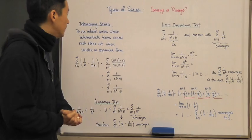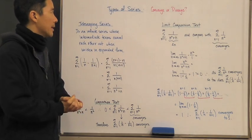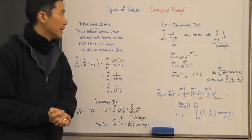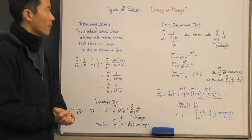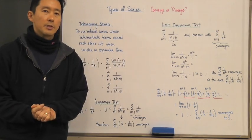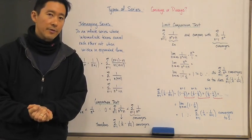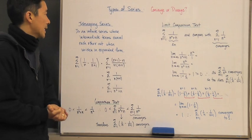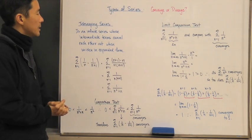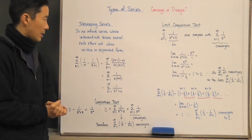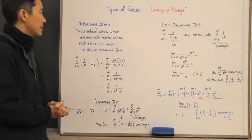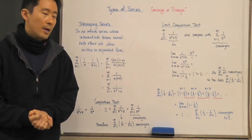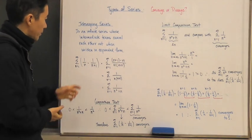Let's take a look at a particular type of series called the telescoping series, and we're looking at whether or not this series converges or diverges. It's an infinite series whose intermediate terms cancel each other out when written in expanded form.